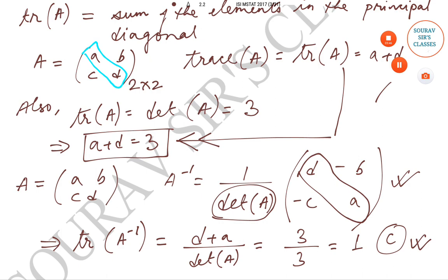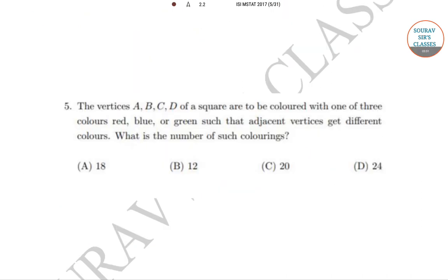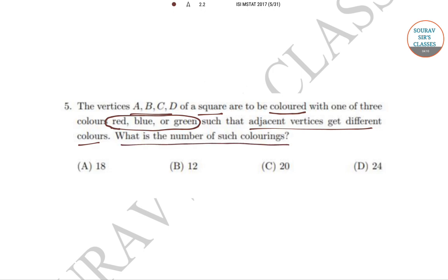Let's do the next question, which is question number 5. In question number 5, it has been said that the vertices A, B, C, D of a square are to be colored with three colors — red, blue, or green — such that adjacent vertices get different colors. Then what is the number of such colorings? Four options have been given.